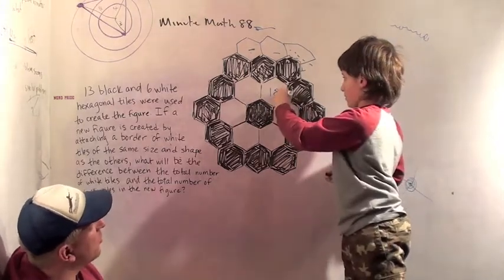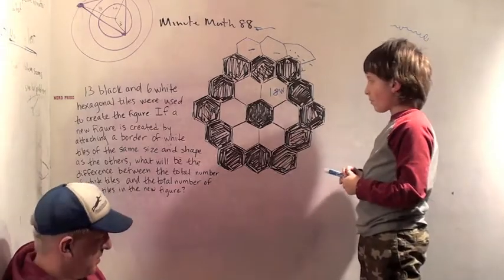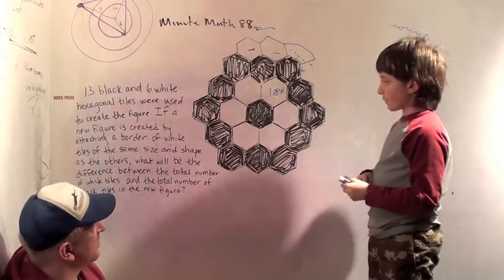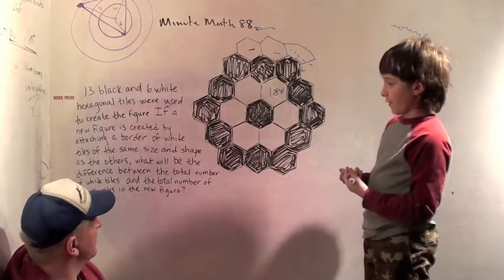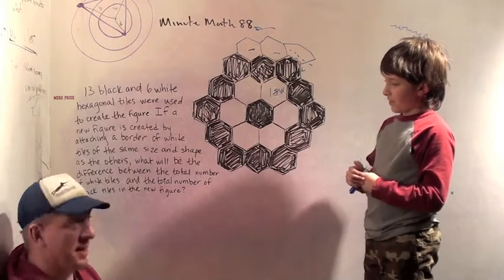So how many white tiles will there be total in the new figure? There's six plus eighteen, which is twenty-four. Okay. And how many black tiles will we have in the new figure? We'll still have thirteen. We'll still have thirteen.